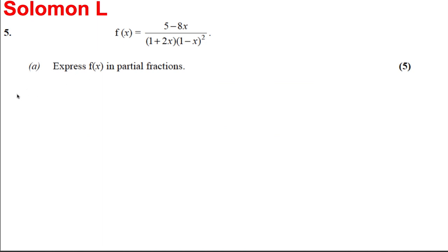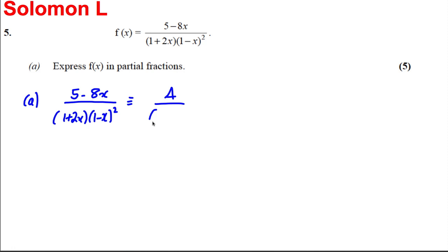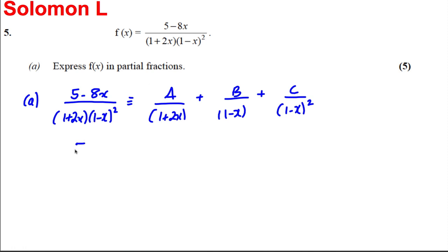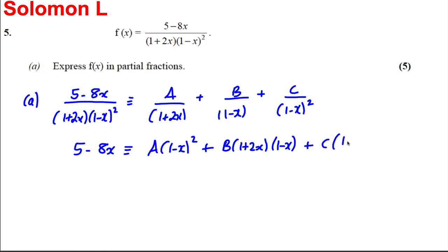Part a — this is a standard partial fraction setup you should know: (5 - 8x) / [(1 + 2x)(1 - x)²]. This equals A over the first distinct factor, plus B over the second factor to the power of 1, plus C over the third factor to the power of 2. We make the right-hand side have a common denominator and equate the numerators, giving 5 - 8x ≡ A(1 - x)² + B(1 + 2x)(1 - x) + C(1 + 2x).